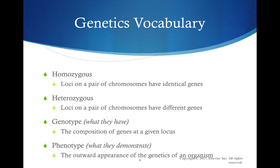When we are testing for this, you need to understand the vocabulary. Homozygous means that the chromosomes have identical genes. Heterozygous means there's a pair of different genes. Genotype is the composition of the genes at a given spot on the chain, and phenotype is what they look like or what they demonstrate — the outward appearance of the genetics.